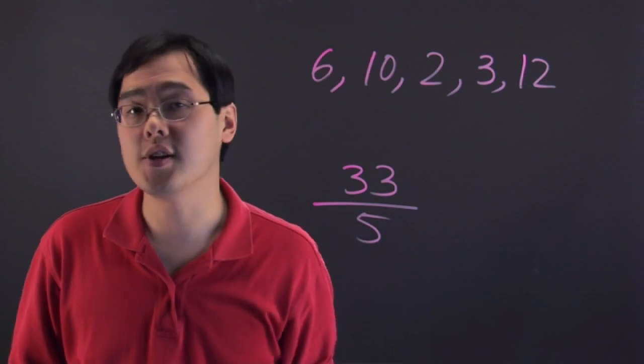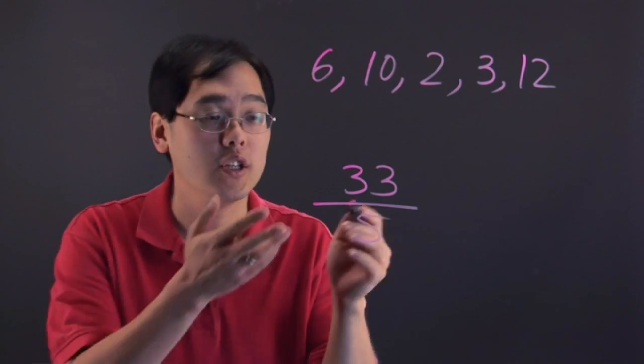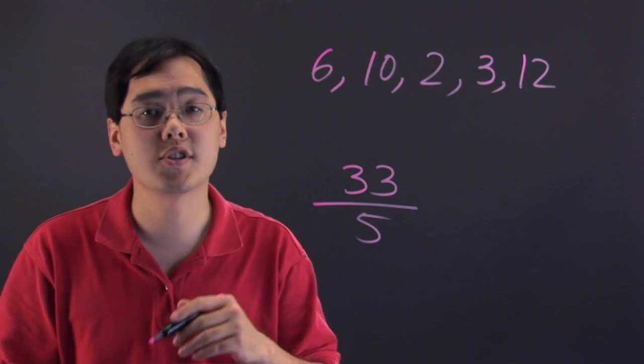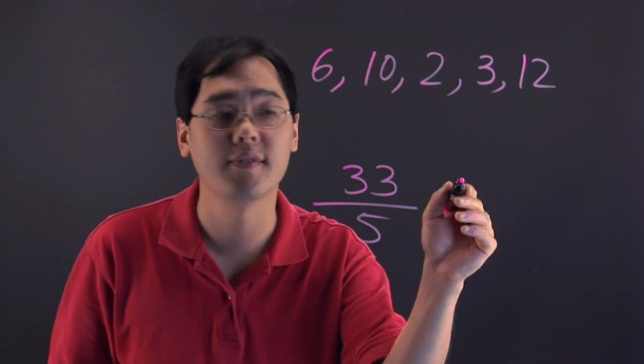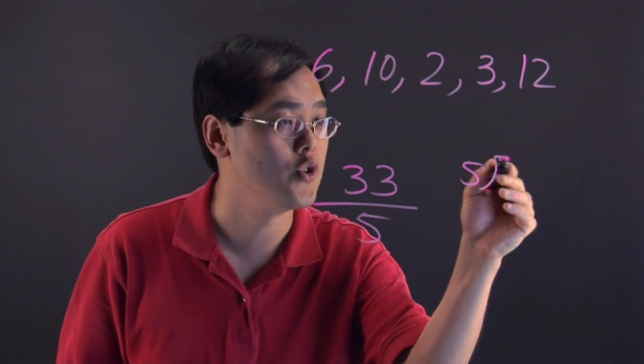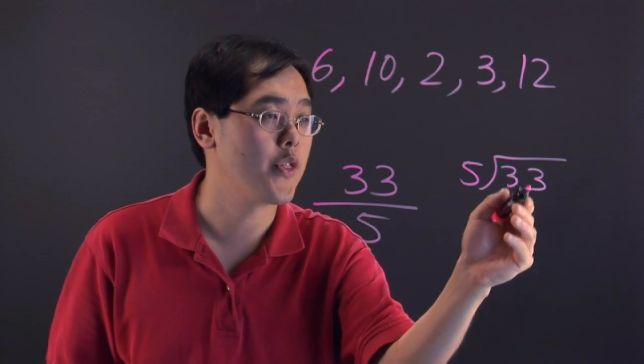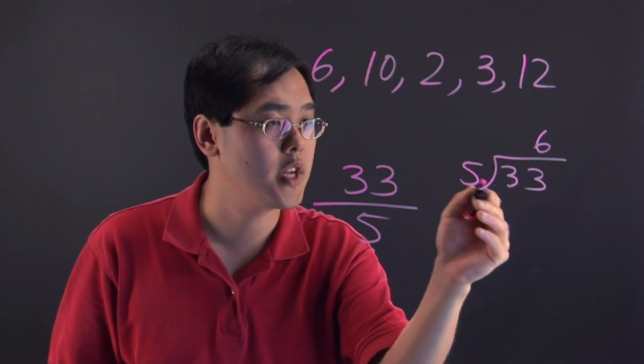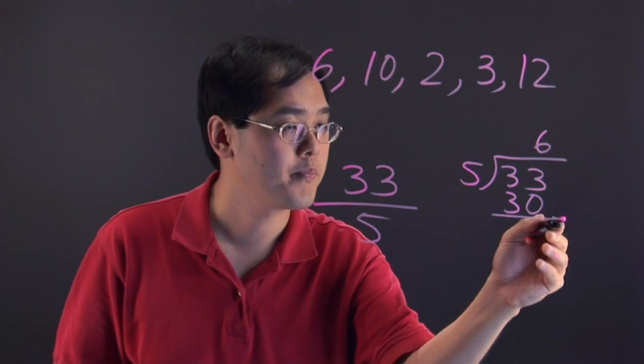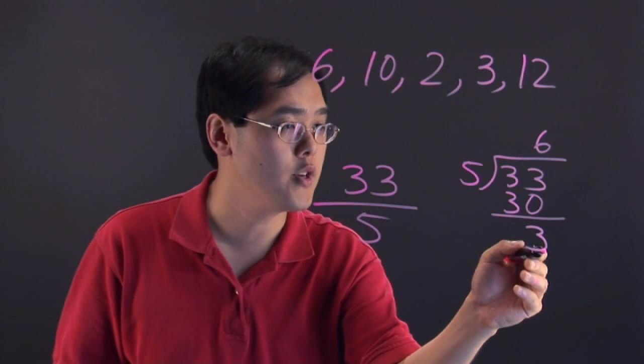You take 33 and then you divide by 5. You could leave it as an improper fraction if you want, but just to give us a little bit of context, let's go ahead and divide 5 into 33. 5 goes into 33, 6 times, 6 times 5 is going to be 30, and remainder of 3.